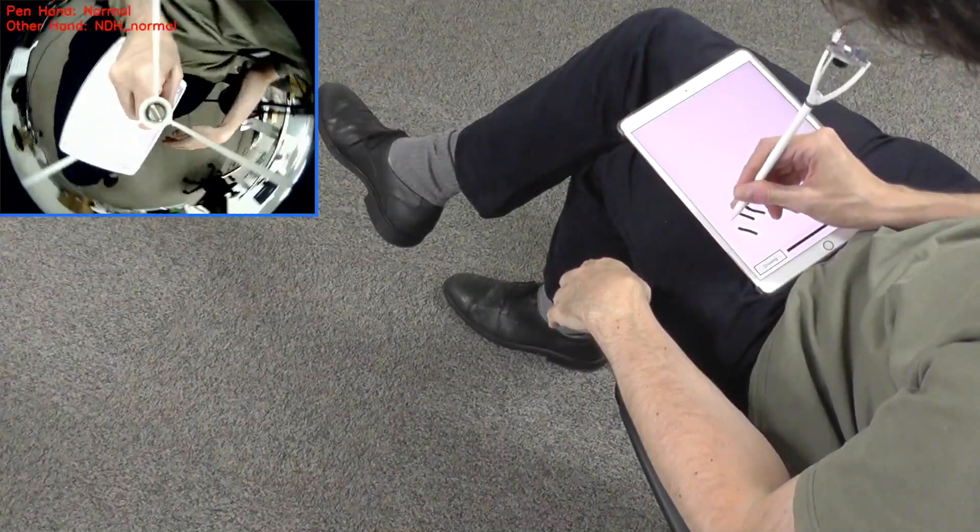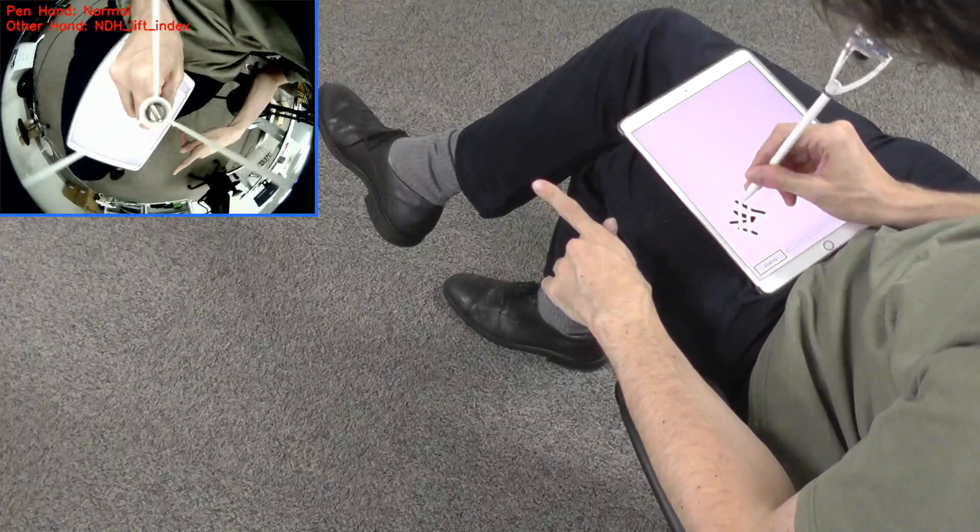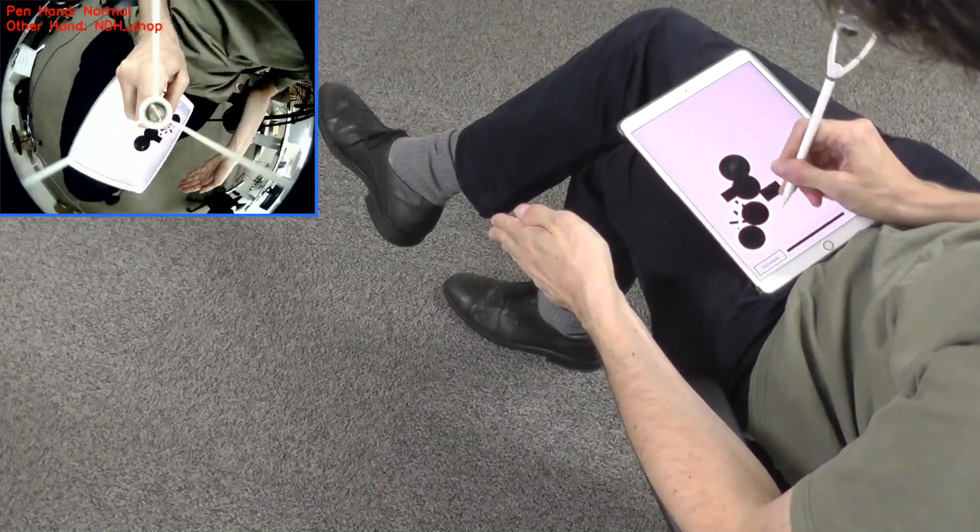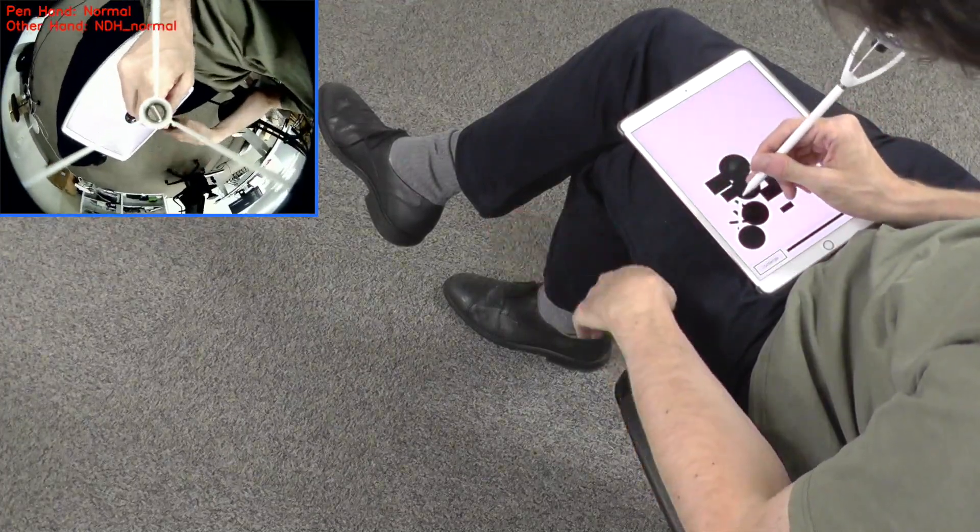PenSight can see hands moving in areas that are blind spots for the front or rear cameras of the device, such as slightly below the tablet plane. This allows relaxed hand posture-based interactions while sitting.